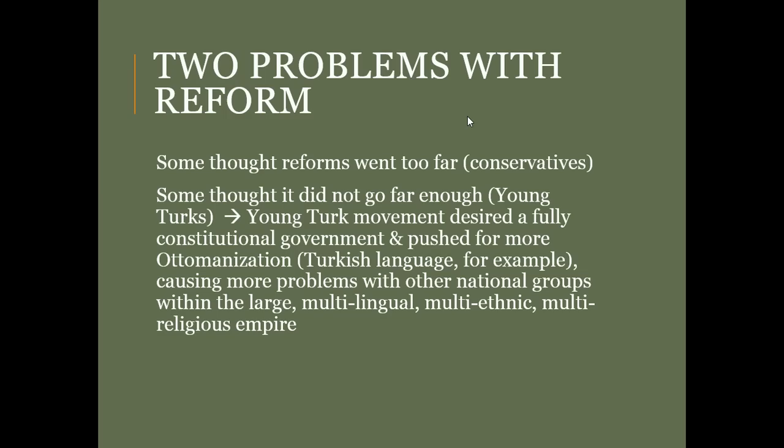Two problems with reforms: some think reforms go too far — religious conservatives in the Ottoman case — and some think they do not go far enough. Double star the Young Turks: the Young Turk movement wanted a fully constitutionalized government, to get rid of the sultanate, and pushed for even more Ottomanization — more use of the Turkish language. This alienated most Arabs within the empire who were proud of their own ethnicity and Arabic language. Those large multilingual, multi-ethnic, multi-religious empires struggled to hold together in an era when national identity was increasingly important.